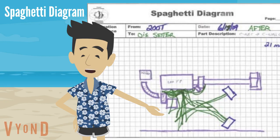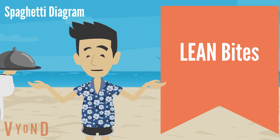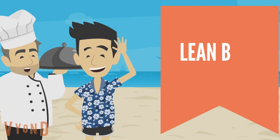To get started with your spaghetti diagram, use a scale floor plan or graph paper and add your workstations to the correct scale. Then draw the movements between the workstations and measure either the distance traveled or the time taken. Finally, in collaboration with those working in the area, relay out the workstations to reduce the distance traveled or the time taken.